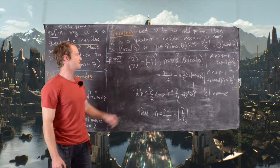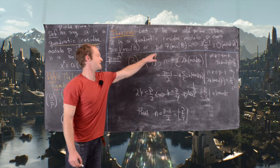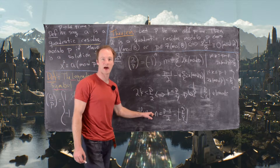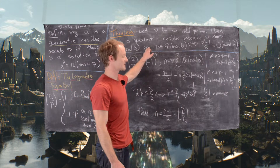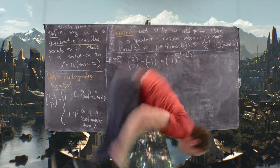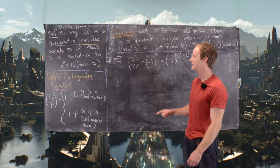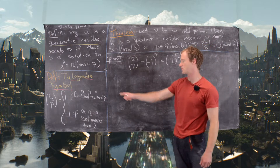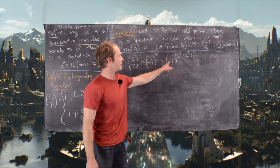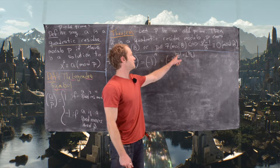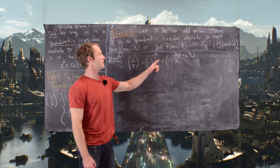So we'll calculate the Legendre symbol (2/p) = (−1)^n, where n = (p−1)/2 − ⌊p/4⌋. On the next board we'll compute this. We established that (2/p) is given by (−1) raised to the power (p−1)/2 minus ⌊p/4⌋. All we really need to know is the evenness or oddness of this exponent.